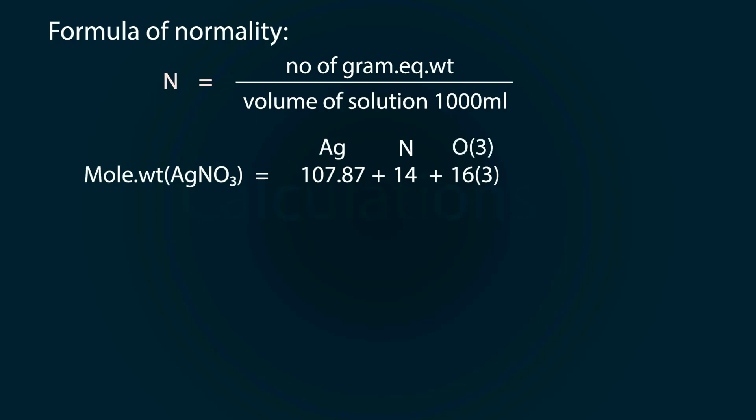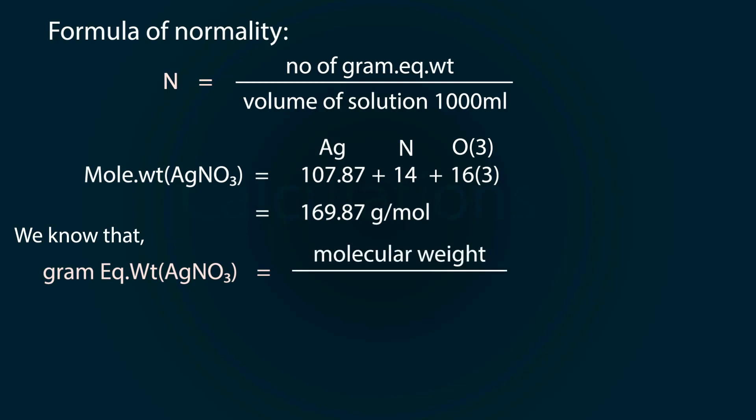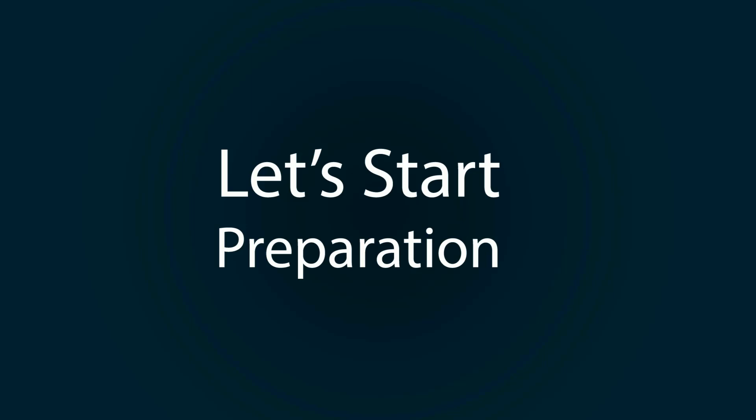We also know that gram equivalent weight equals molecular weight divided by acidity or basicity. So equivalent weight of AgNO₃ equals 169.87 divided by 1, which is the acidity of silver nitrate, and we get our value as 169.87 grams. Let's start our preparation.